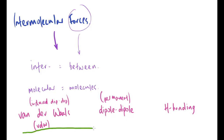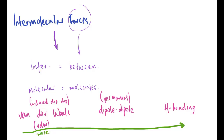These forces are not equal in strength. I've listed them in order on purpose: Van der Waals forces are the weakest, and hydrogen bonding is the strongest. Note that even hydrogen bonds are not as strong as proper intramolecular bonds.